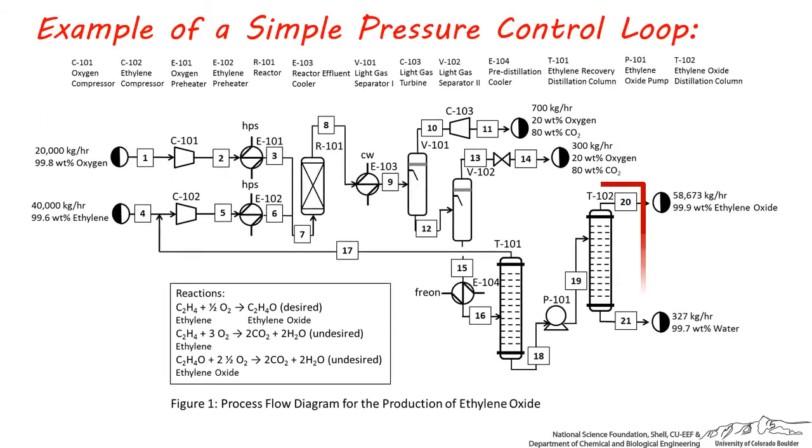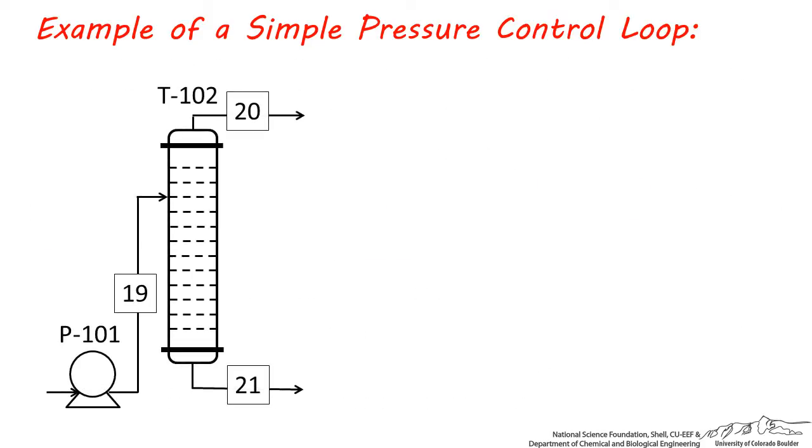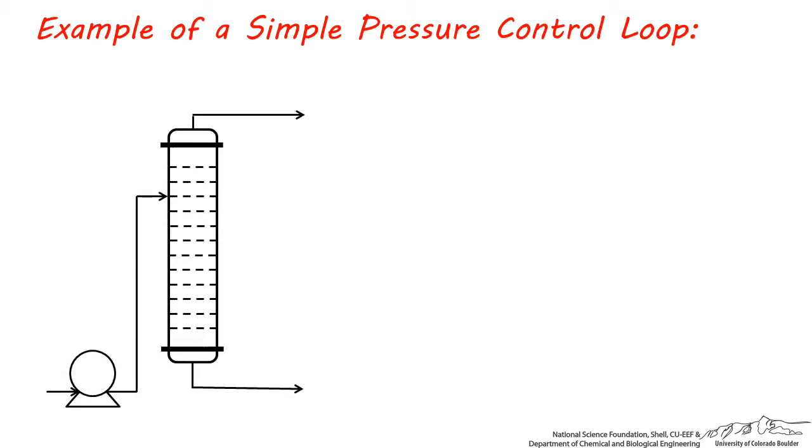As an example, let's consider putting a pressure control loop at the inlet of T102. This distillation column was optimized to run at a higher pressure because this helps achieve better separation for this particular feed. So the purpose of this feedback loop is to control the feed pressure going to T102. Let's look more closely at this distillation column and the pump preceding it to see how we can control the pressure of this feed stream.